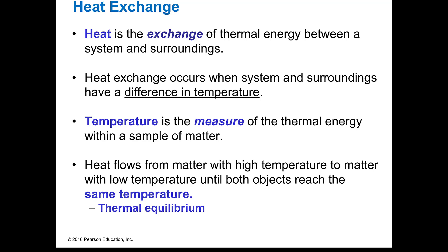We talked about heat being the exchange of thermal energy between systems and surroundings, and it occurs when there's a difference in temperature between the two. Temperature is not really heat — it's a measure of the thermal energy. Temperature is just telling us how hot something is, and we're only looking at the difference or the change in thermal energy. Heat will flow from a high temperature to a low temperature, always going downhill until both objects are at the same temperature — we call that thermal equilibrium.